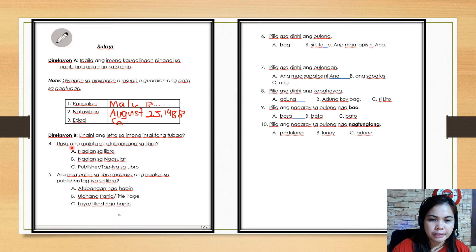Let's move on to direction B. Lingini means encircle. Encircle the letter of your correct answer. Unsa ang makita sa atubangan sa libro - what can you see in front of the book? Letter A: ngalan sa nagsulat or the name of the writer, C: the publisher or the owner of the book.